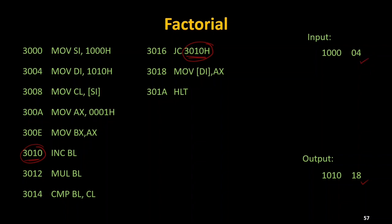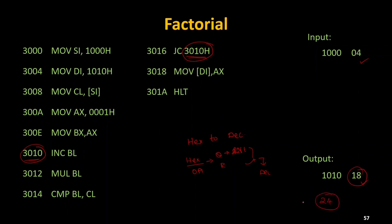If you want to see results in decimal, in a previous video we did a program for hexadecimal-to-decimal conversion — dividing AX by 0A to get quotient and remainder, then shifting digits and adding both to get the decimal value. I can perform this operation on the obtained result to get 24 in decimal, but the program output is hexadecimal, which is 18.